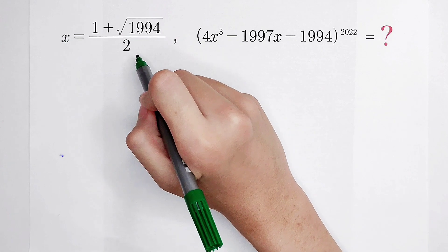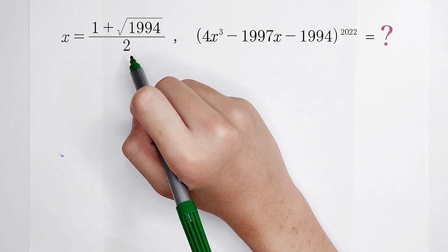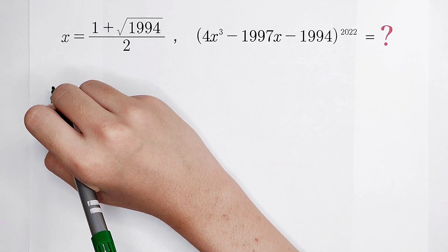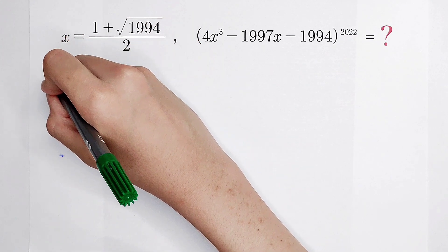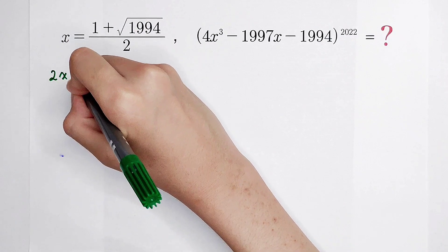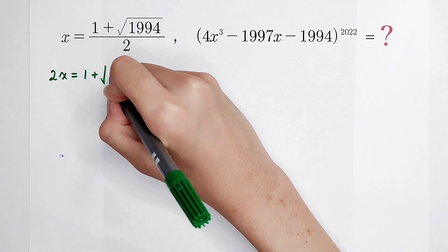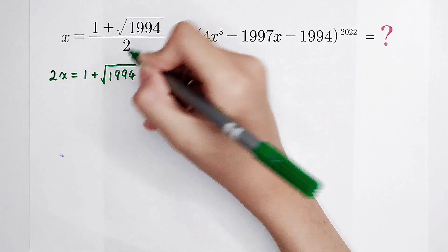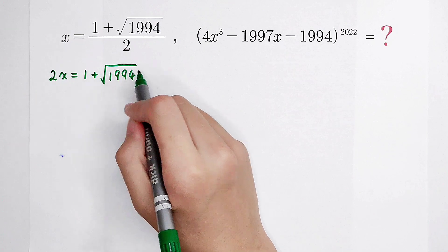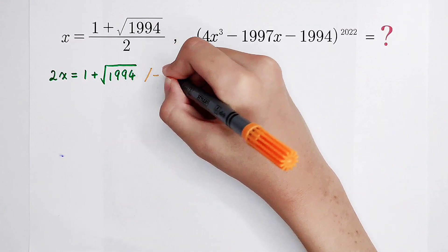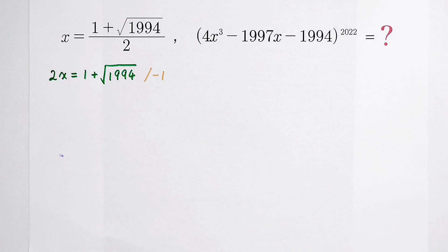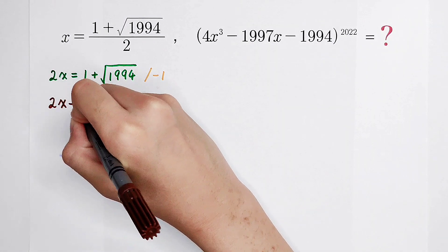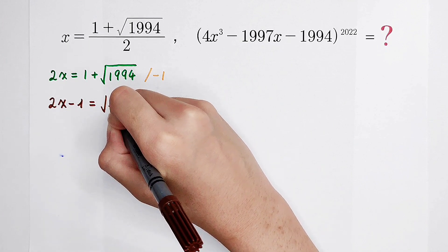Then, from this equation, we multiply by 2 on both sides. You can see what will appear: 2 times x is equal to 1, then plus square root of 1994. If we want to remove the square root, we should minus 1 on both sides. Now, 2 times x minus 1 is equal to square root of 1994.